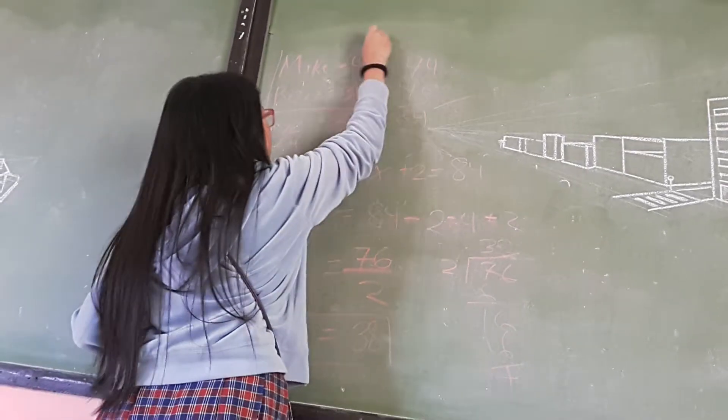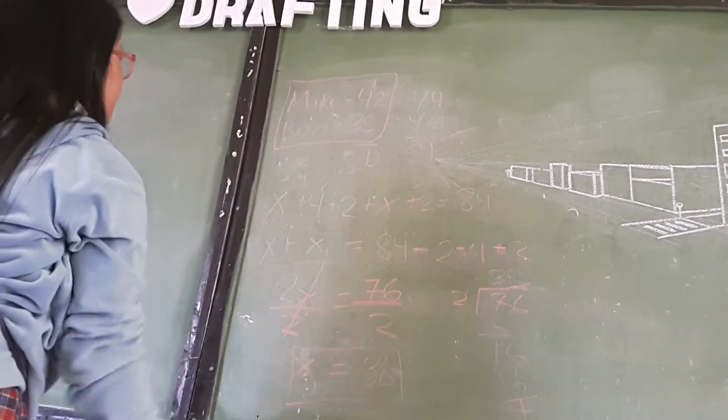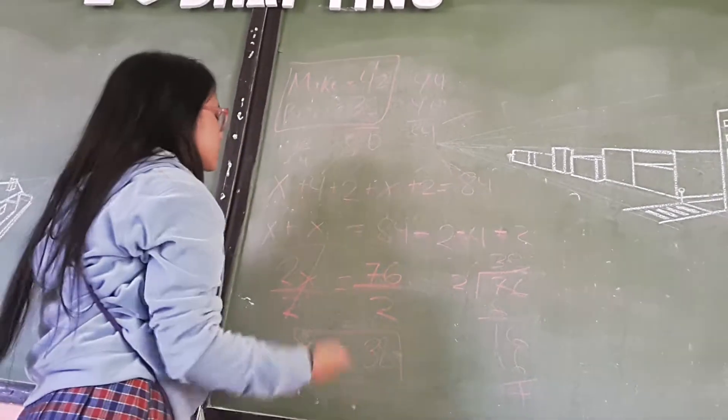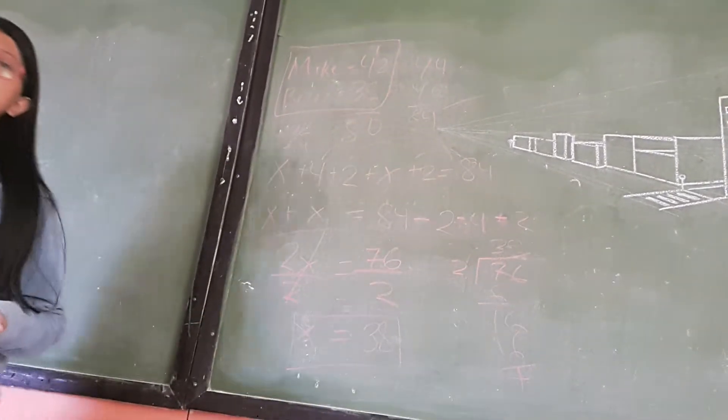So the answer will be Mike is 42 and Ron is 38 years old. And that will be it. Thank you.